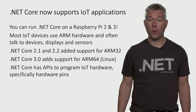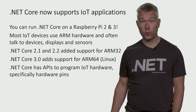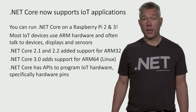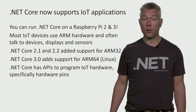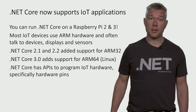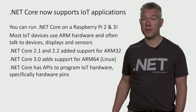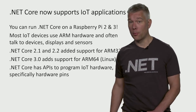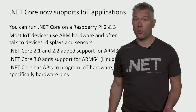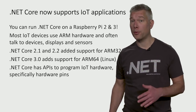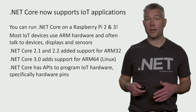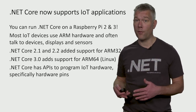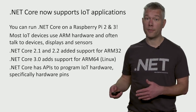You can run .NET Core on a Raspberry Pi 2 or 3. We don't yet support Raspberry Pi 0, but we're working on it. Most IoT devices support ARM hardware and often talk to devices like sensors, displays, and other things. .NET Core 2.1 added support for Linux ARM32, .NET Core 2.2 added support for ARM32 for Windows, and with .NET Core 3.0 we're adding support for ARM64 for Linux, which a lot of customers have asked for.